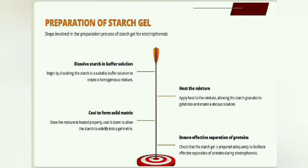Gel preparation: Potato starch is hydrolyzed in acidified acetone at 37 degrees Celsius. The suspension is then neutralized with sodium acetate, washed with a large amount of distilled water, and dried with acetone.